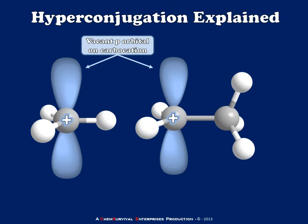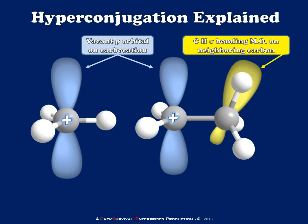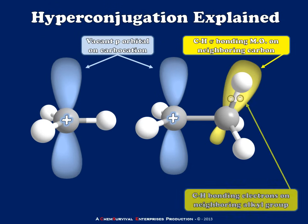Now, what's different between the ethyl and methylcations is that the ethylcation has a neighboring CH-sigma bonding molecular orbital. And this bonding molecular orbital is actually filled with electrons. That's how it's holding on to the hydrogen. But we also know that these electrons, though I've drawn them here in between the two bonded atoms, we know that they actually have a free run of that entire volume that is defined by the molecular orbital.